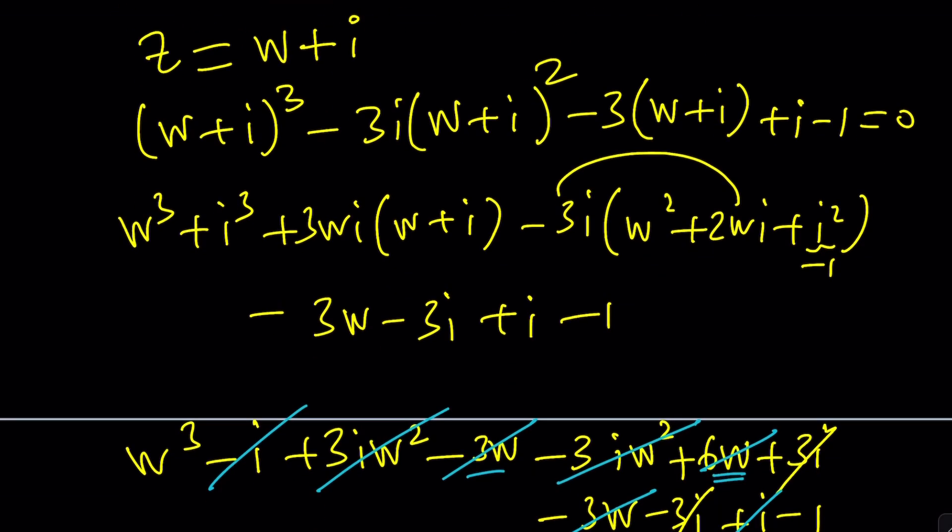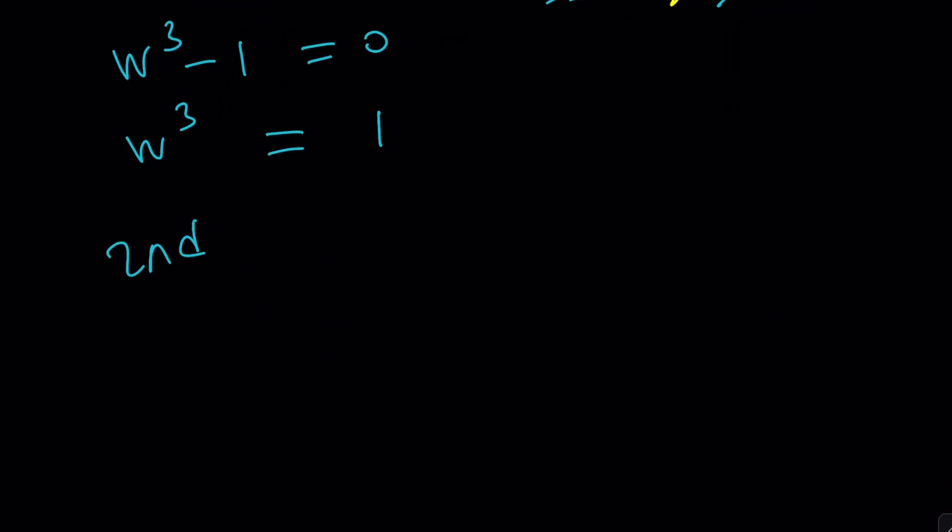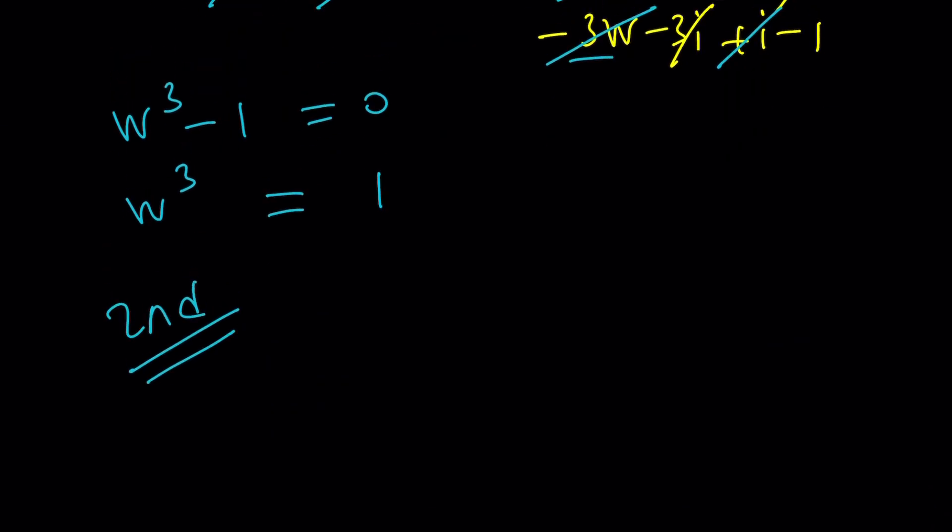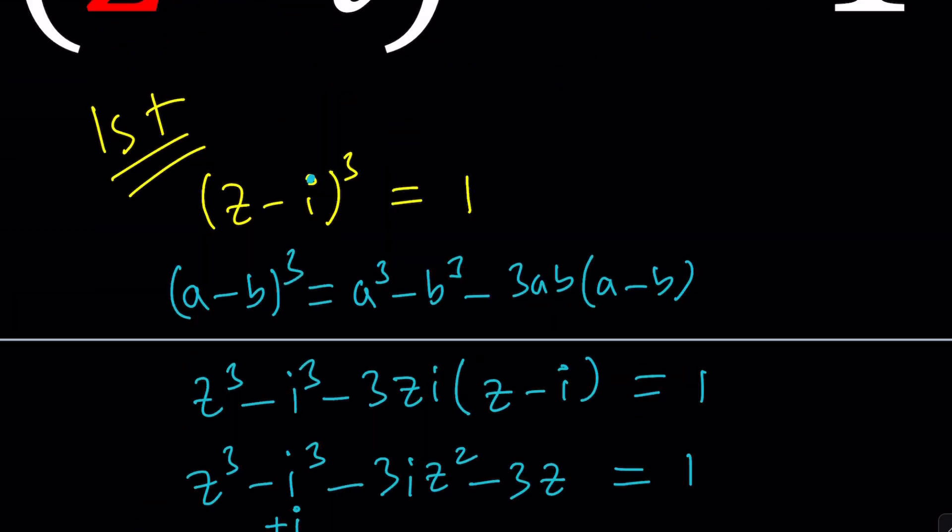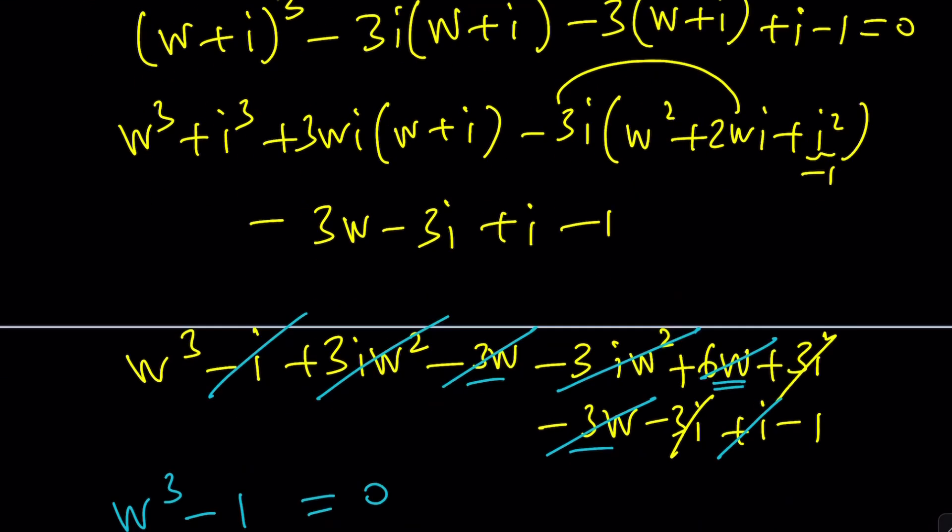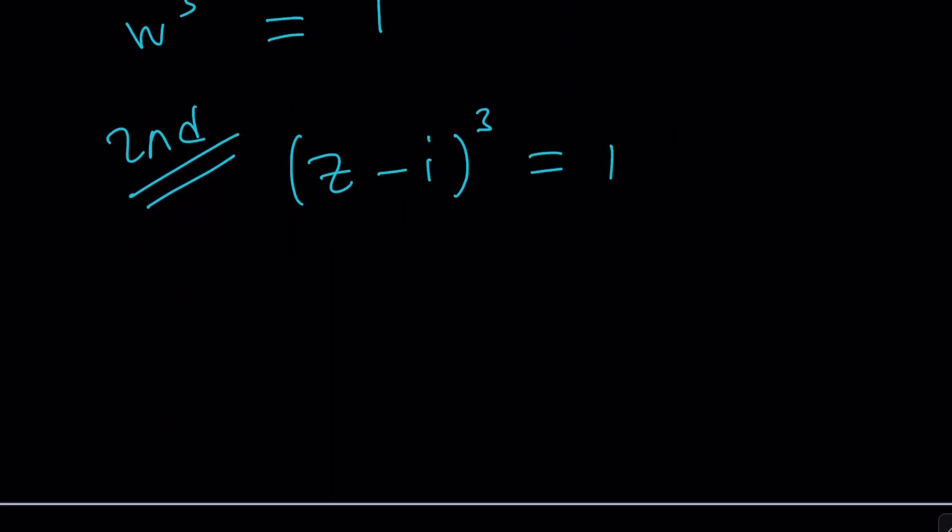Back to basics. And we're going to call this second method. And we now have Z minus I cubed equals 1. Now think about it. Obviously, you could replace Z minus I with W all the time. That's perfectly fine. Now here's what we need to think about. And I will do it anyways.